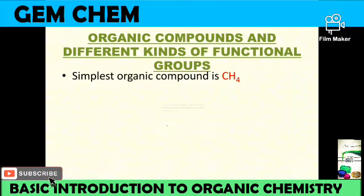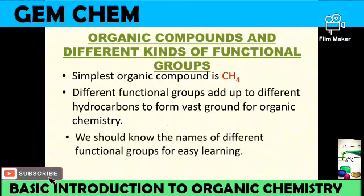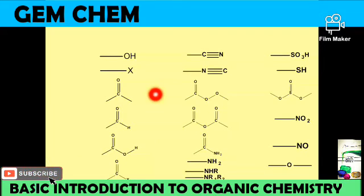Different functional groups add up to the hydrocarbons. Mainly, organic chemistry comprises carbon and hydrogen along with some heteroatoms like nitrogen, oxygen, chlorine, bromine, iodine, and sulfur. These form different types of groups which attach to the hydrocarbons to form the vast chemistry of organic chemistry. We should know the names of different functional groups for easy learning.